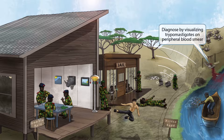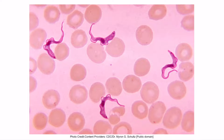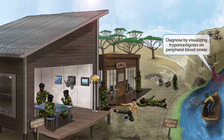Trypomastigotes are important to remember for African trypanosomiasis because they can be seen on peripheral blood smear, which is the way the disease is diagnosed. One goat has tripped all the way down to a razor-sharp fence and lost its head, landing in a pool of its own blood. This is a peripheral blood smear showing several trypomastigotes in a patient with African trypanosomiasis. Tripping goat in blood stands for diagnosing by identifying trypomastigotes on peripheral blood smear.